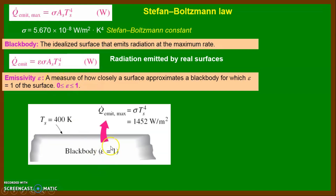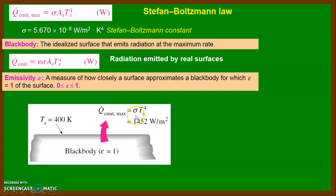For example, consider a black body with a surface temperature of 400 K. It is very important: whenever you apply the Stefan-Boltzmann Law, temperature must be in absolute scale — in Kelvin. If the surface temperature is given in degrees centigrade, you must convert it to Kelvin first. Applying Q-dot emit maximum equals σ·Ts⁴ with area 1 m², we get Q emitted equals 1452 W/m².